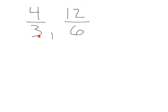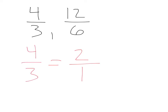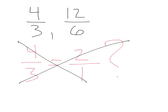What about 4/3 and 12/6? Well, 4/3 is already simplified. For 12/6, we know 6 can go into 12 twice, and our denominator will be 1, so we'll get a ratio of 2 to 1. Does that equal 4/3? No, of course it does not. So this one does not form a proportion.